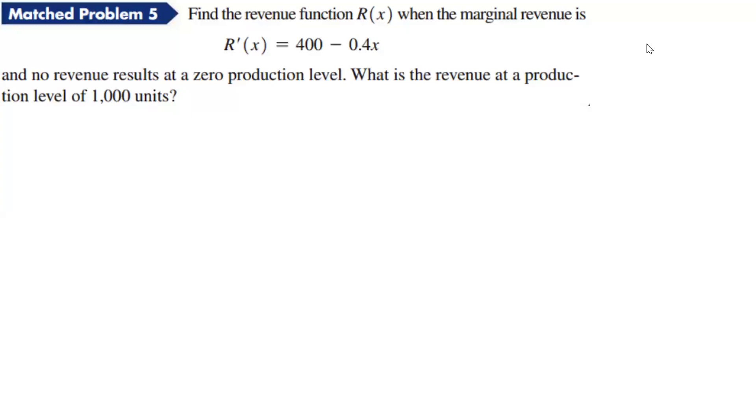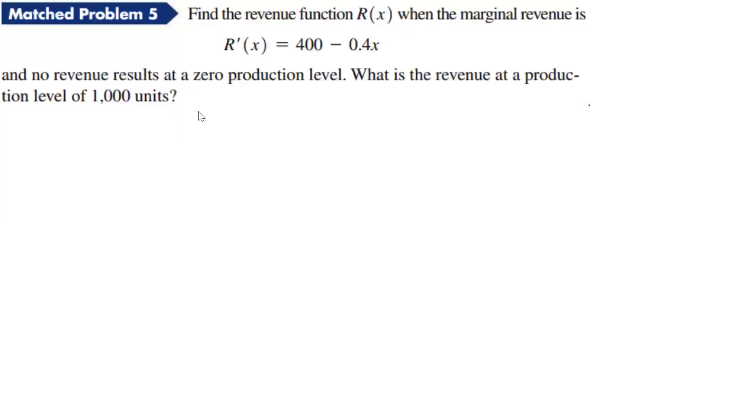All right, so here we're supposed to find the revenue function r of x when the marginal revenue is given by r prime of x equals 400 minus 0.4x, and no revenue results at a zero production level, and what is the revenue at a production level of 1,000 units?